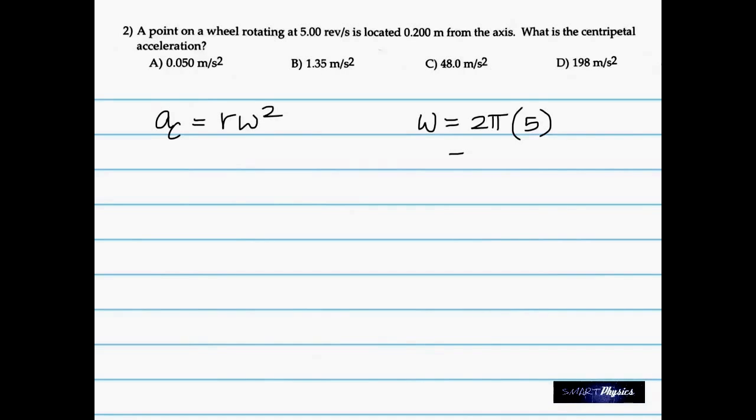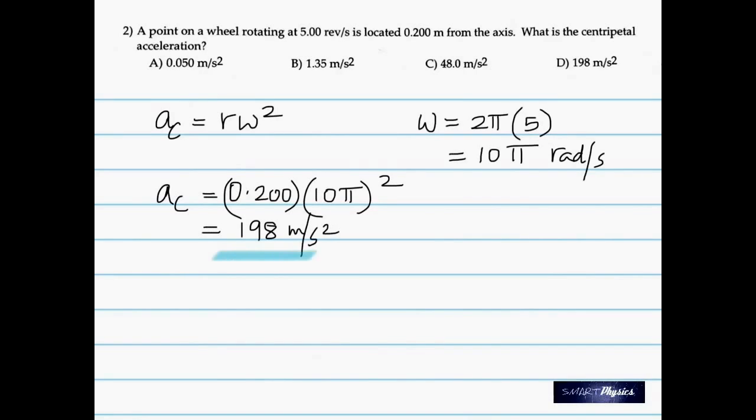Omega is 2π times frequency. What is frequency? It is the number of revolutions in one second. In this question, number of revolutions per second is given as 5. So 2π times 5, that's 10π radians per second. Now take that substitute into this equation. Calculate that quantity. You get 198 meter per second squared. That is the centripetal acceleration.